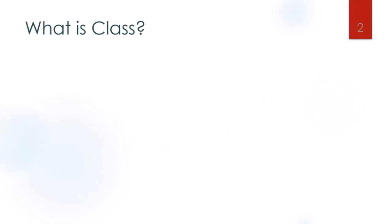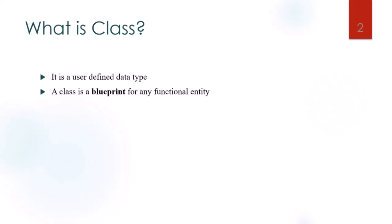What is a class? It is a user-defined data type. A class is a blueprint for any functional entity which defines its properties and its functions. It encapsulates the information and behavior about an object.